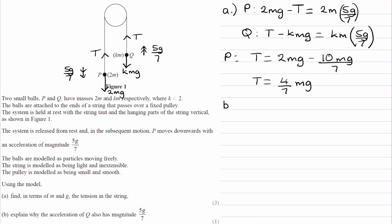So for part b, the question says, explain why the acceleration of Q also has a magnitude of 5g over 7. Well, the reason for that is because we're modeling our string to be inextensible. So what that means is we can't stretch our string. If you imagine that the string that we had here had some give to it, let's say it's a piece of rubber, then what happens is whenever you pull P down, if you pull it down quite quickly, the rubber would stretch, and it would take a split second before Q catches up in speed.